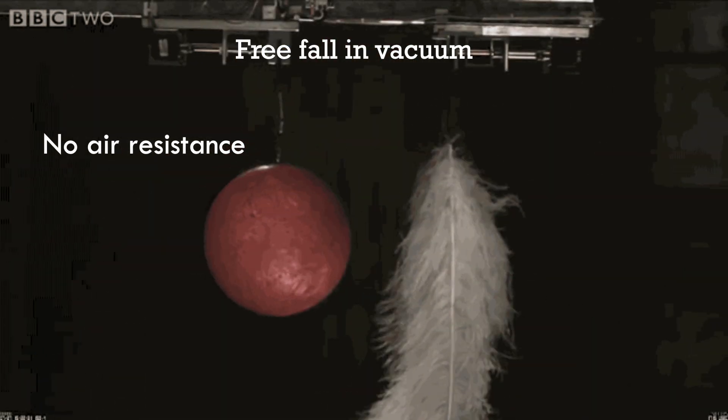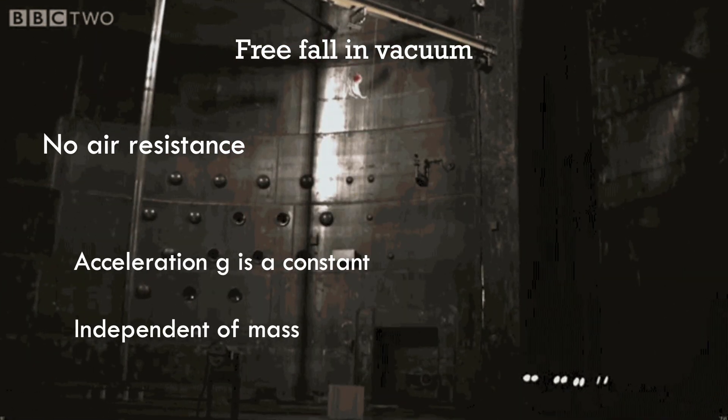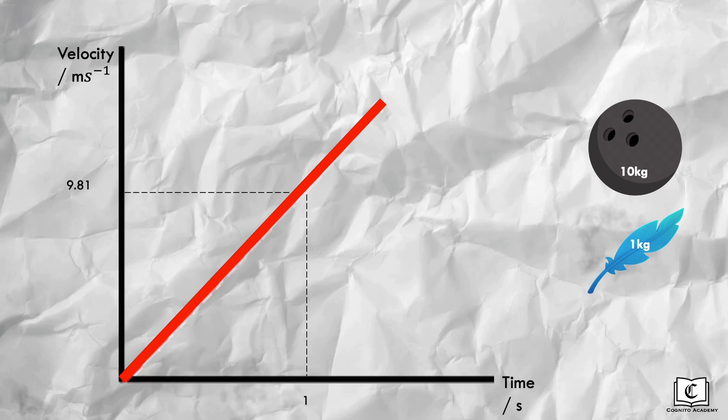This is because acceleration of any object due to gravity is a constant and is not affected by mass. Looking at the velocity time graph for both the bowling ball and the feather, we can see that both objects share the same line on the graph since their motion during free fall is similar as seen in the clip.